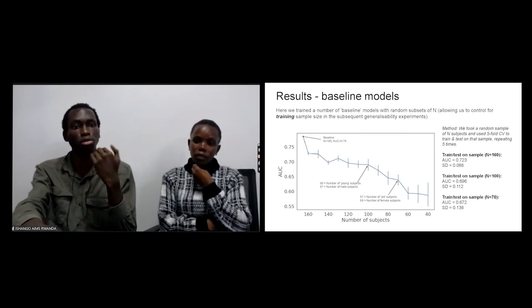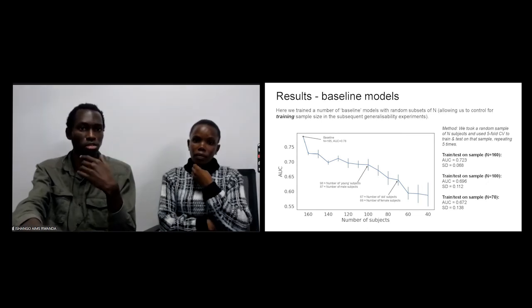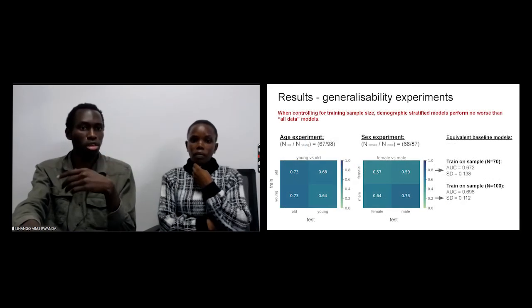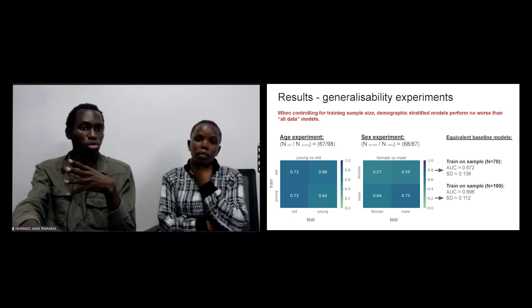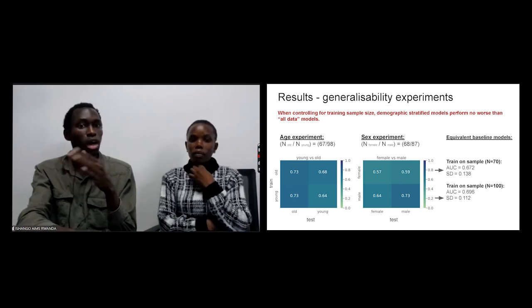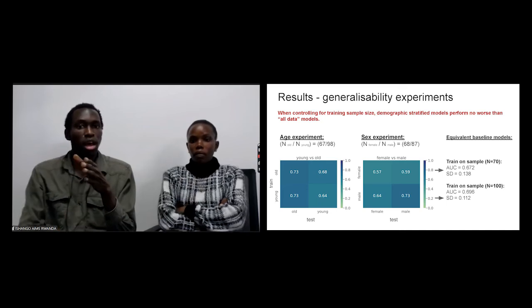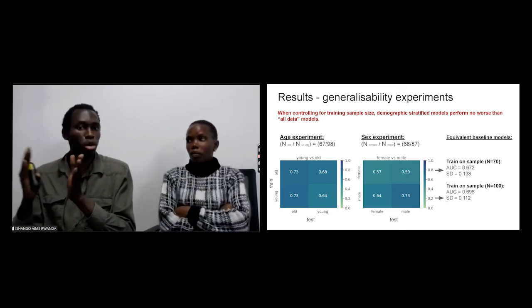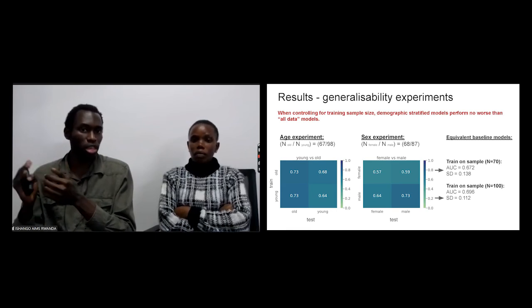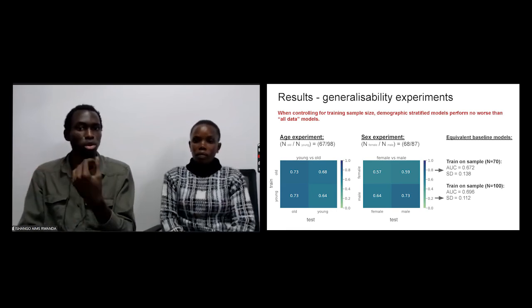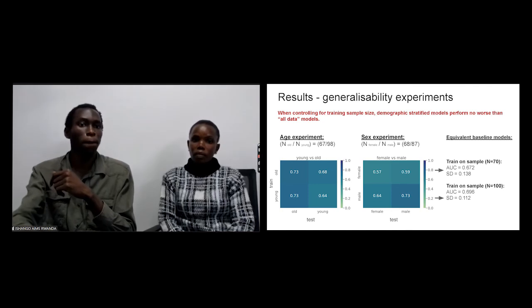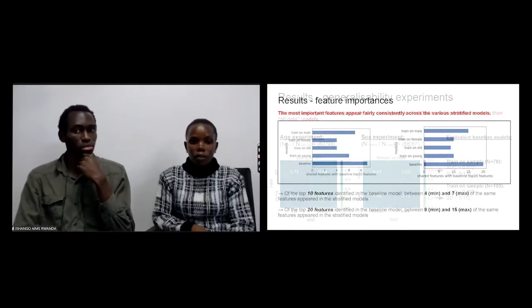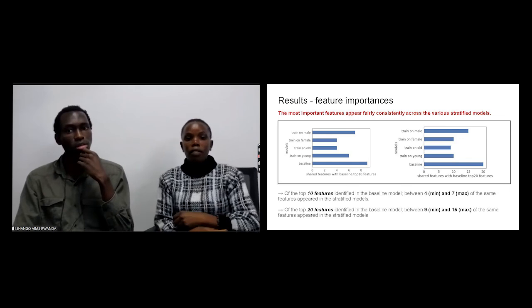Then we can see the same thing here, that our model generalized well, because the performance we have here for young and old, or for feminine and male, are close to the performance we have from the data for the same numbers of subjects in the dataset, even if it's dropped down because of the size of the data. Then we tried to analyze the feature consensus.